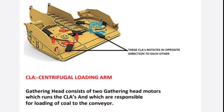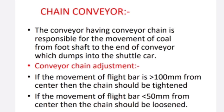Coal that falls on the apron is taken into the chain conveyor by the gathering arms, which load it into the shuttle car. Regarding chain conveyor adjustment: if the flight bar movement is greater than 100 mm, the chain should be tightened; if the flight bar movement is less than 50 mm, the chain should be loosened.